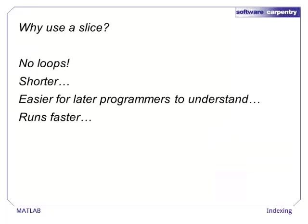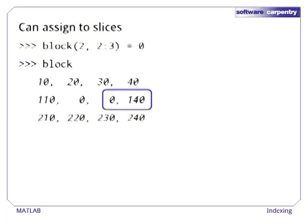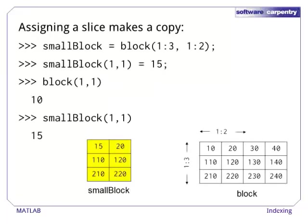MATLAB programs should always use slices and other indexing operations rather than write loops over arrays. There are several advantages, including shorter code that is more easily understood and improved run time. It is also possible to assign to slices. For example, we can assign 0 to columns 2 and 3 in row 2 of a block in a single statement.